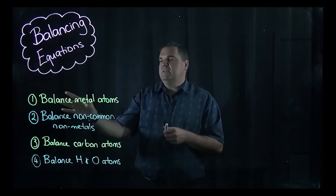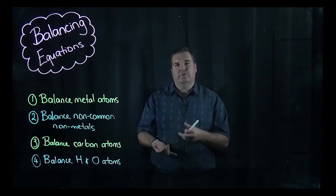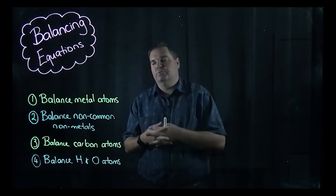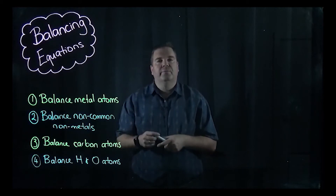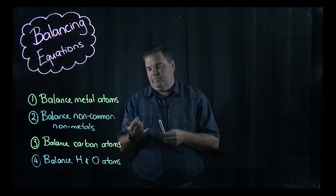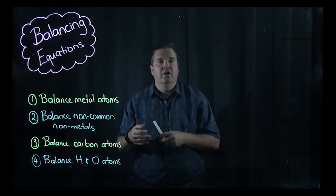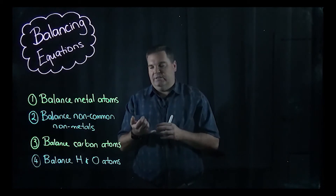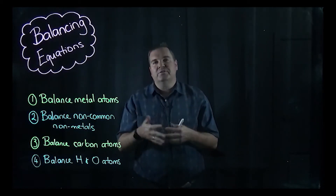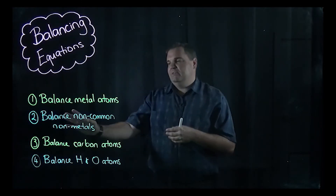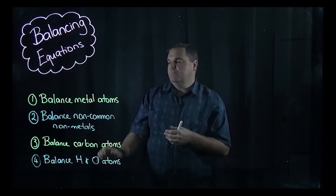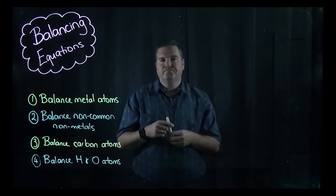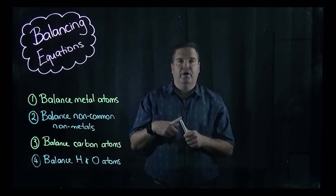First, I always start by balancing the metal atoms — sodium, magnesium, calcium, whatever. Then I balance what I call non-common non-metals: things like sulfur, phosphorus, nitrogen, chlorine — things you don't always see in reactions. Because carbon, oxygen, and hydrogen are quite common, you leave them to the end. So after non-common non-metals, balance your carbon atoms, then finally hydrogen and oxygen.